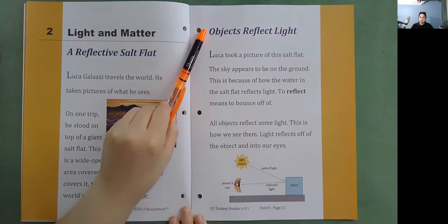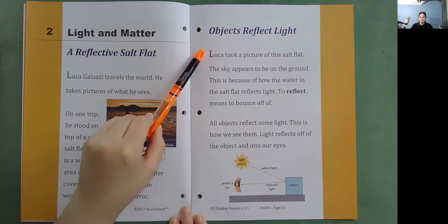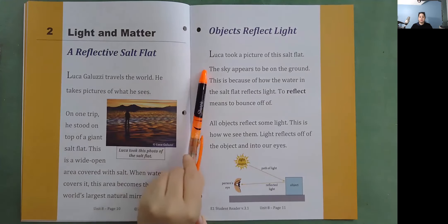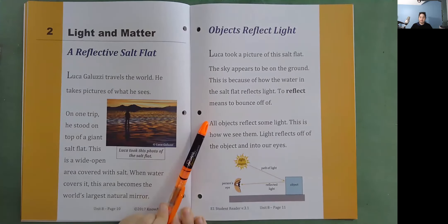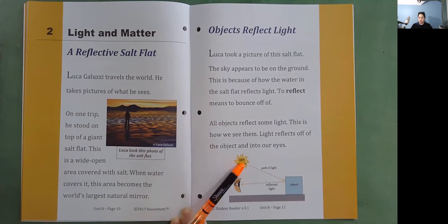Objects reflect light. Luca took a picture of this salt flat. The sky appears to be on the ground. This is because of how the water in the salt flat reflects light. To reflect means to bounce off of. All objects reflect some light. This is how we see them. Light reflects off of the object and into our eyes. So here's our light source, the sun, and it goes to the object. It reflects off of the object and into our eye.